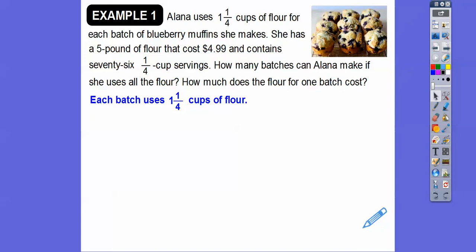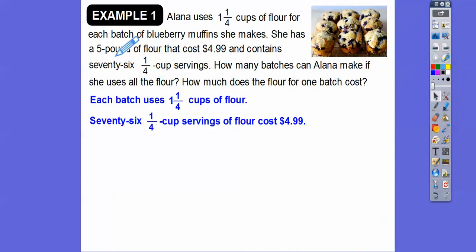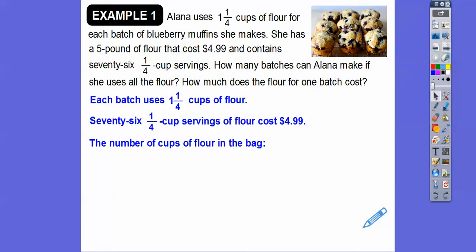Each batch uses 1 and 1/4 cups of flour. The five-pound label we don't need at all — we just need to know that the bag contains 76 one-quarter cups, and that bag costs $4.99. The five-pound weight is extraneous information — they're just throwing that in to throw you off. So 76 one-quarter-cup servings costs $4.99. The number of cups in the bag: if there are 76 one-quarter cups, we multiply 76 times 1/4 — that is, divide by 4 — which tells us there are 19 cups in the bag.